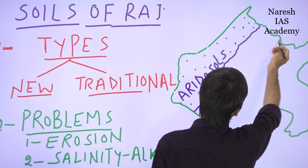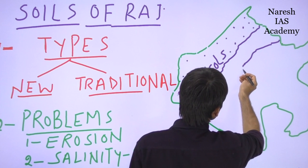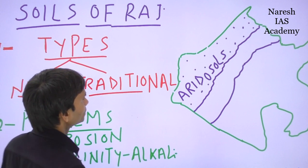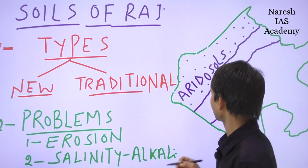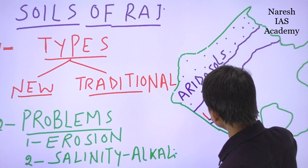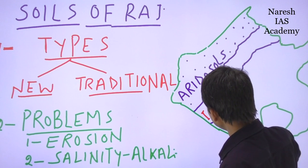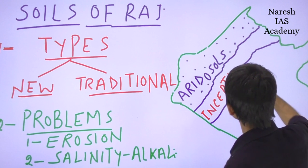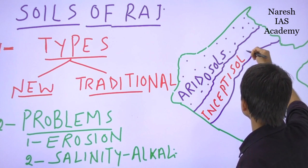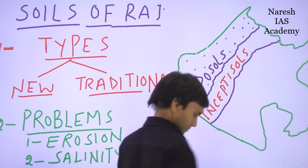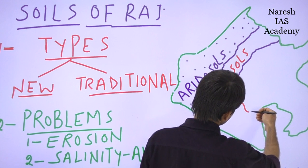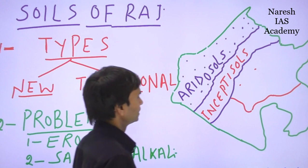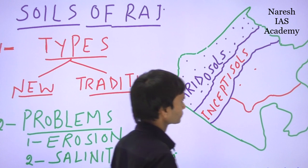The mid part of Rajasthan, or the geographical extent of the Aravalli mountain region, comes under the new classification of Inceptisoils. And the third region, which is the humid or sub-humid region, falls under Alfisols.